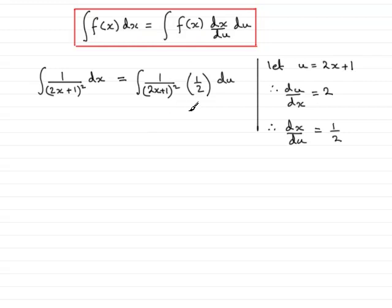Now I need to change this all into the variable u and tidy it up at the same time. And I can see that I might as well pull the half out the front of the integral because it's a constant. Then we have 1 over u squared, because u is the 2x plus 1. So we have 1 over u squared, and we have the du.